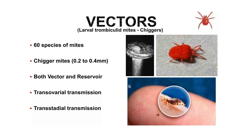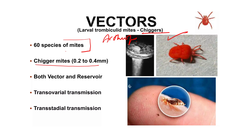The vector responsible for disease transmission is the chigger — an arthropod. There are 60 species of mites, and chigger mites measure 0.2 to 0.4 mm in size. The mite can act as both a vector and a reservoir. Its transmission occurs in two ways: trans-ovarial transmission and trans-stadial transmission.